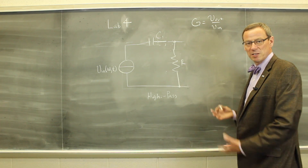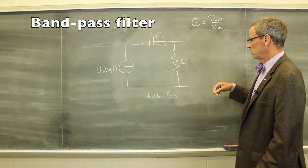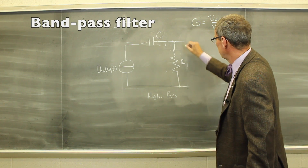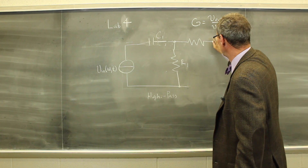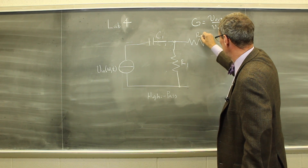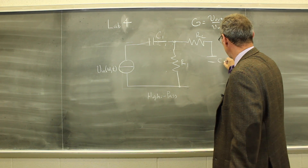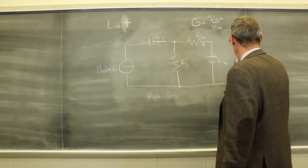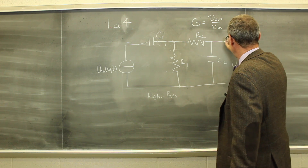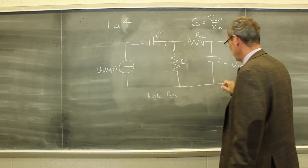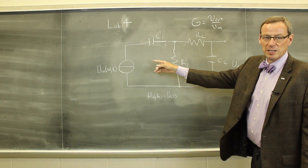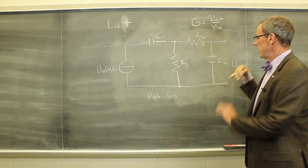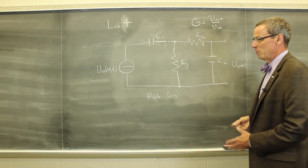The last part of this lab, we're going to build a so-called band-pass filter, where we use the high-pass filter as the first part, and we add a low-pass filter with some R2 and C2 on the output, and then we'll measure the output voltage after this last filter. This one lets high-frequency through, this one lets low-frequency through, and together they make a band-pass filter.